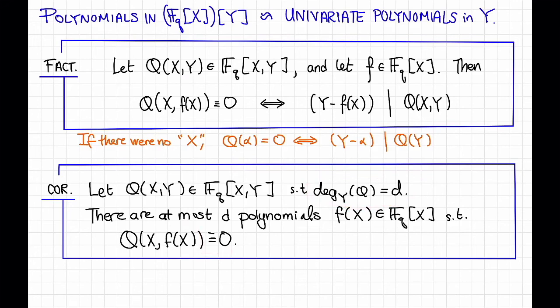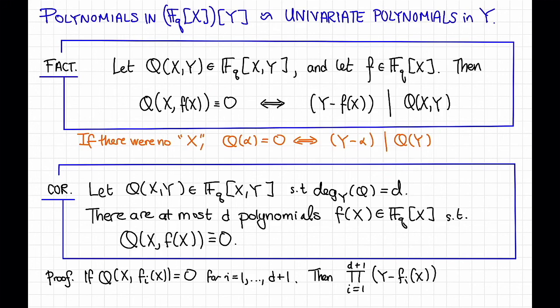Here's a quick proof of the corollary assuming that fact. Suppose that there are lots of F's so that Q(X, F(X)) = 0. Let's say Q(X, F_i(X)) = 0 for d+1 different values of i. Then by the fact, that implies that the polynomial, which is the product from i=1 to d+1 of (Y - F_i(X)), must divide Q(X,Y). But this polynomial has degree d+1 in Y, and Q has degree only d in Y, and that's a contradiction. So if you believe this fact, then this corollary follows.